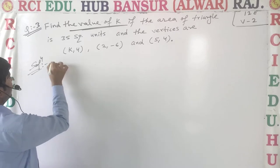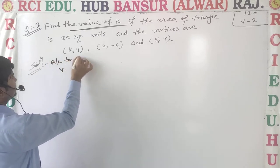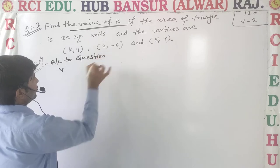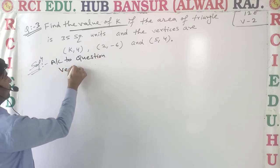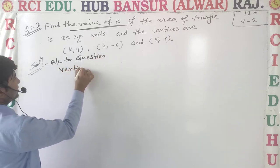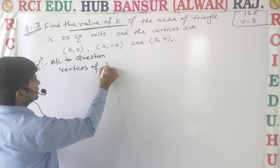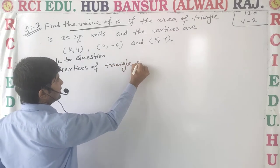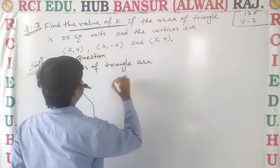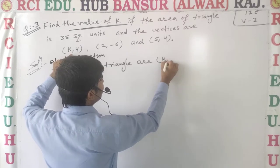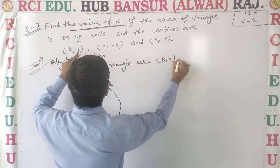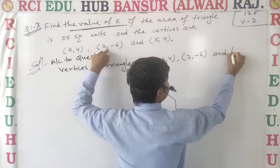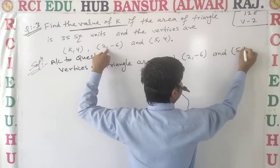According to the question, the vertices of the triangle are K4, 2, -6, and 5, 4.